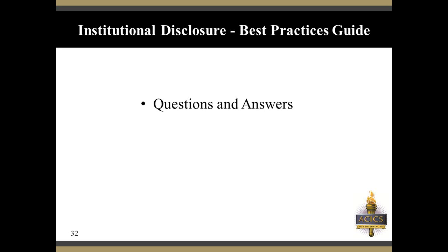Question: Is it acceptable to include comprehensive and detailed information on a PDF document that is linked from the student consumer information page? I would be open to considering that. If your student disclosure information is already available in a published PDF, giving direct access to that PDF through your student disclosures page — either on the homepage or one click in — would be a very satisfactory way to show deference to this guidance. But until we see the specific circumstance, we won't know for sure what is the best answer regarding the use of a PDF as a disclosure.